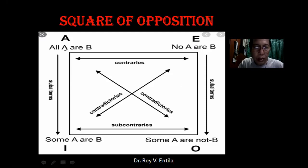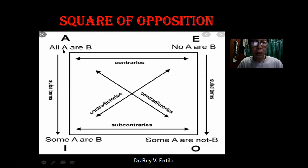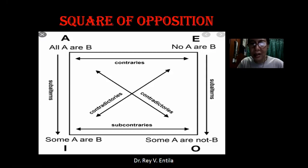Now, as you can see here, A against E — like boxing — A against E is what we call contrary. They are truly opposite. All A are B, and then E says no A are B. For example: 'All Lasallians are intelligent' versus the universal negative: 'No Lasallian students are intelligent.' So they are truly contrary.